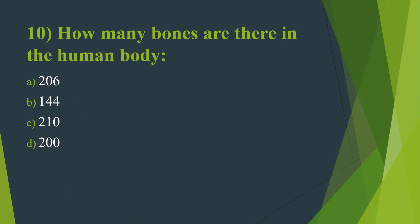Tenth question: How many bones are there in the human body? Option A, 206. Option B, 144. Option C, 210. Option D, 200. Answer is Option A, 206.